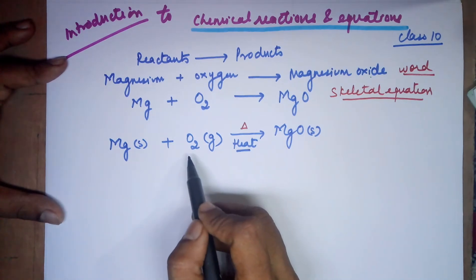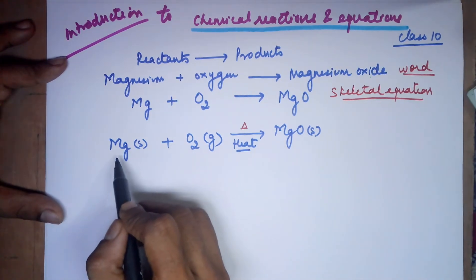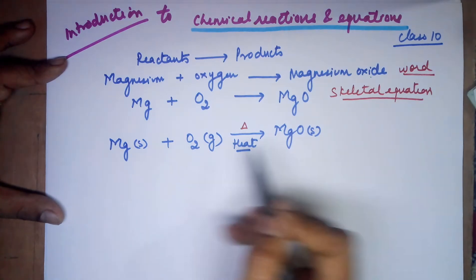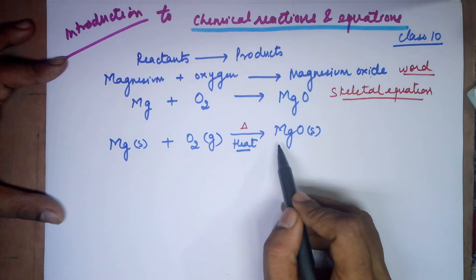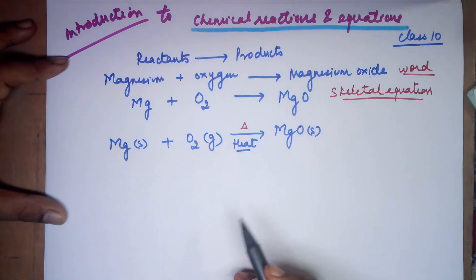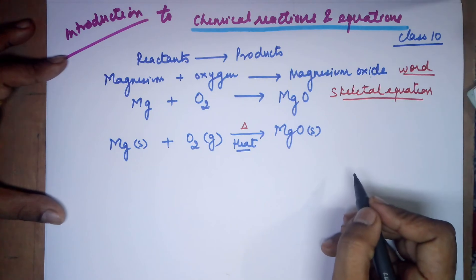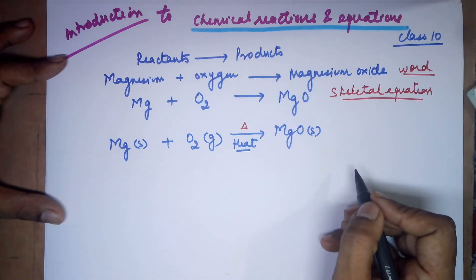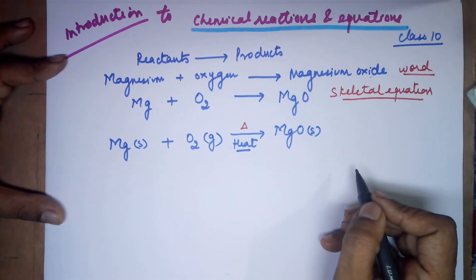In this case, when you add up the masses on the reactant side, you add the mass of one magnesium and two oxygen atoms. Whereas on the product side, you have just one magnesium and one oxygen. So the masses will not be the same on both sides. Therefore, you require the balancing of the equation to satisfy the law of conservation of mass.